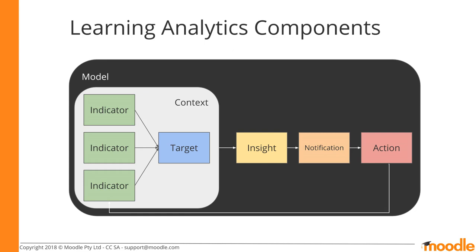Models also include notifications — messages sent as a result of insights — and actions offered to recipients of messages, which can become indicators in turn. As we explore different parts of the system in this course, we will focus on different design criteria and measurement methods. These criteria will be documented in use cases, descriptions of how the user of a system wants it to work.